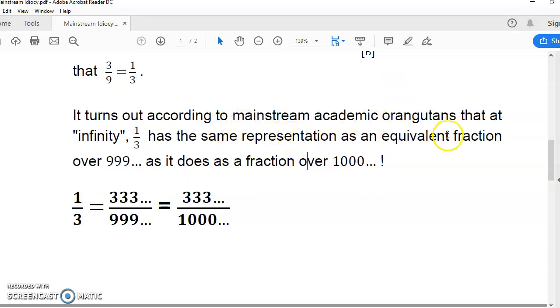But it turns out, according to mainstream academic morons, professors of mathematics and teachers, that somehow at infinity, 1 third has the same representation as an equivalent fraction over 999..., as it does for an equivalent fraction over this series.